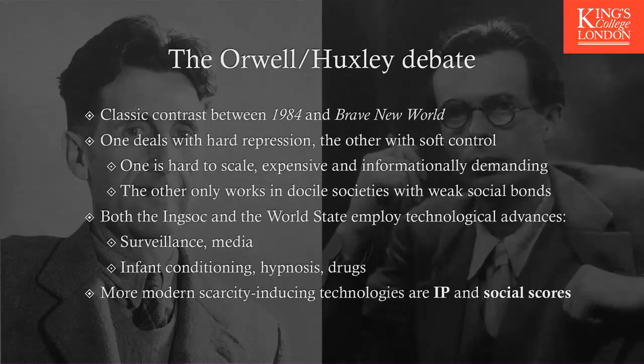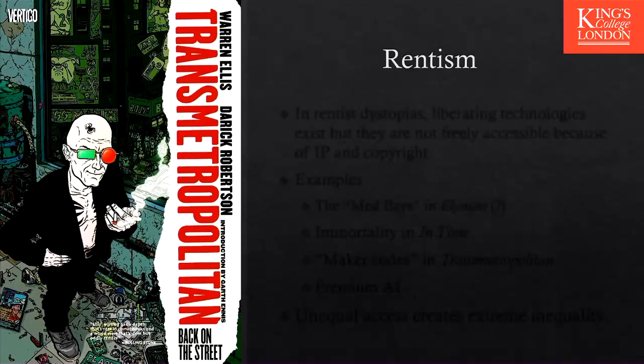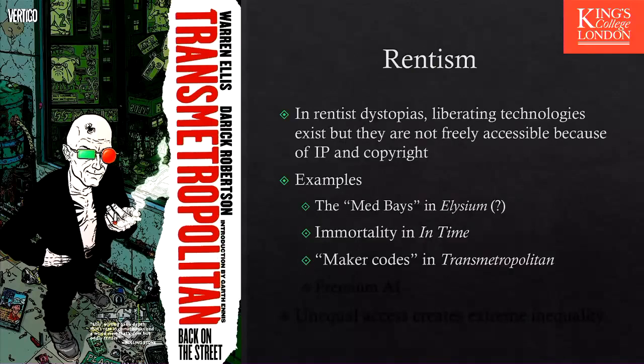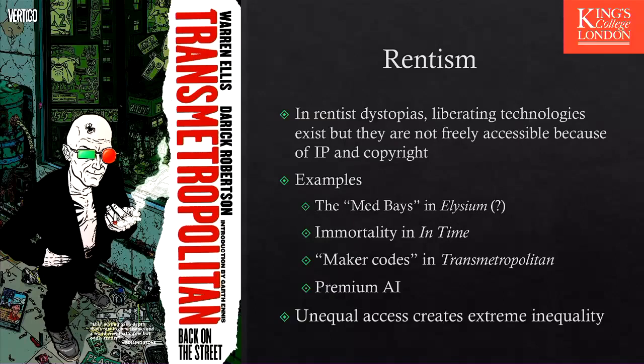This is far-fetched, but in the real world there are two technologies used to preserve the status quo and maintain scarcity: intellectual property (IP) and social scores. The first is easy to understand — with copyright, technologies which could be great are not accessible to everybody. The med bays in Elysium: there's a question mark on whether everybody could actually have them, and there is no clear reason why the poor in In Time cannot also have unlimited time.